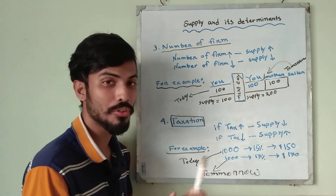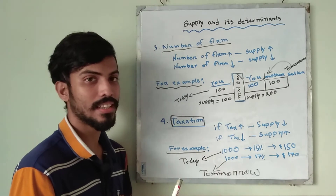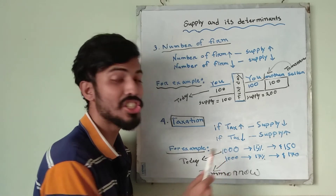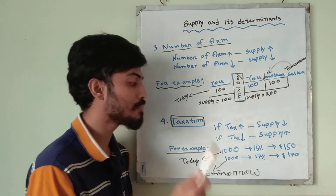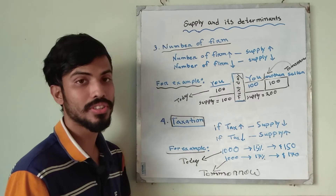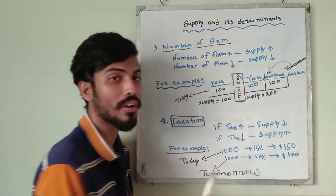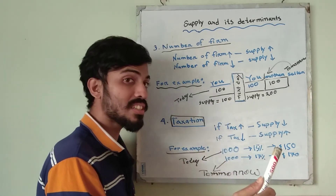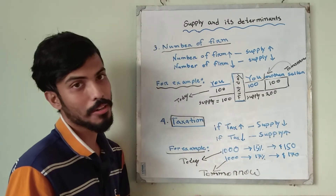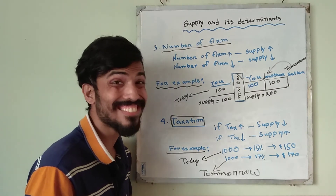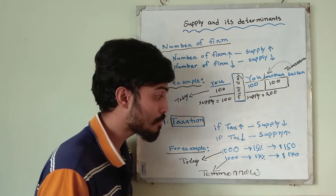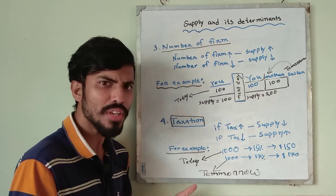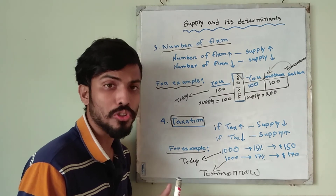For example, today you went to a restaurant and the VAT is 5% on a $1,000 bill, meaning you pay $50. But tomorrow you go to the same restaurant and find the VAT has increased to 17%, so now you have to pay $170. Tax is essentially a cost.